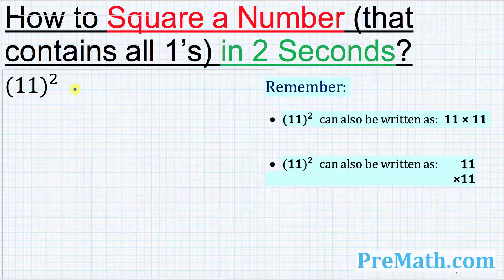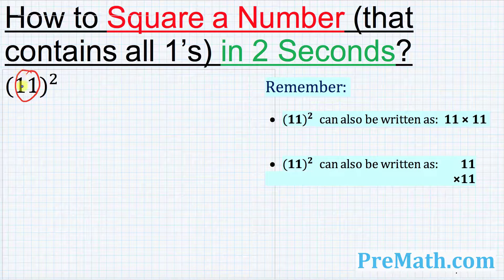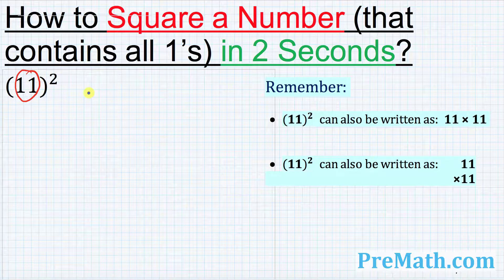Let's go ahead and get started with our very first example, 11 squared. So 11 has how many digits? It has got two digits, so I want you to write down two and then I want you to start counting from the left hand side. So obviously it's gonna be just simply one on the left hand side.